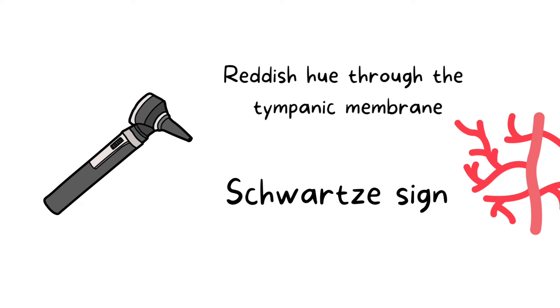In otoscopic examination, we can see a reddish hue through the tympanic membrane, which shows the increased vascularity of an active lesion of otosclerosis, and this is called Schwartze's sign.